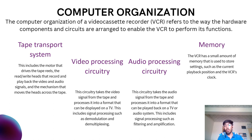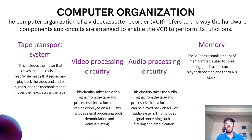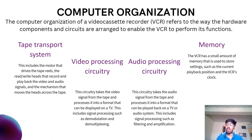Now we will jump onto the computer organization used in VCR. The computer organization of a VCR refers to the way the hardware components and circuits are arranged to enable the VCR to perform its functions. The various computer organization elements are the tape transport system, video processing circuitry, audio processing circuitry, memory, user interface, and many more. We will learn each in a deeper way.